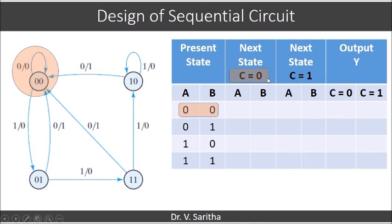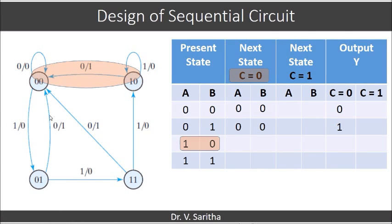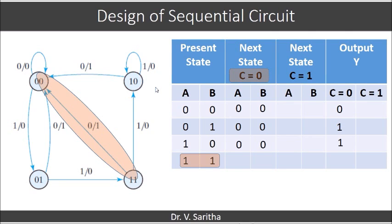From state 0,0 on input C equal to 0, it goes to state 0,0 and the output is 0. From state 0,1 on input C equal to 0, it goes to state 0,0 and the output is 1. From state 1,0 on input C equal to 0, it goes to state 0,0 and the output is 1. From state 1,1 on input C equal to 0, it goes to state 0,0 and the output is 1.